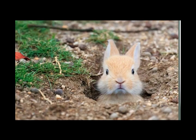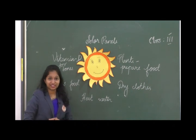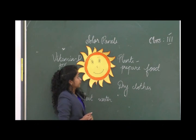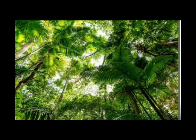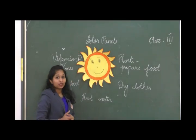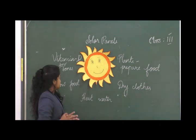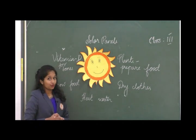Now let us learn the uses of sunlight. Sunlight is used by plants to prepare their food. We use sunlight to dry our clothes and to heat water. Sunlight is also used to grow food.